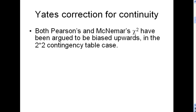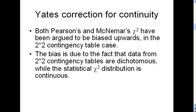So here's Yates' correction for continuity. Both Pearson's and McNamara's chi-square have been argued to be biased upwards in the 2x2 contingency table case. So in any 2x2 table analysis that uses Pearson's or McNamara's chi-square, theoretically you should be using Yates' correction for continuity. The reason is that there's an upward bias due to the fact that data from a 2x2 contingency table is dichotomous in nature while the statistical chi-square distribution is continuous in nature. So to correct for that fundamental difference, people should be using the Yates' correction, theoretically.